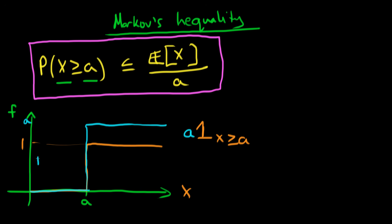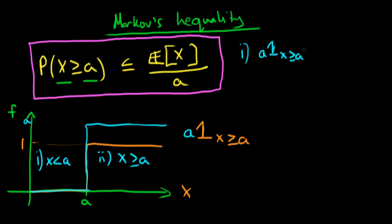We can think about this function as having two distinct regions. In the first region, x is less than a, and in the second region, x is greater than or equal to a. In region 1, our function a times 1{x ≥ a} takes on a value of 0. Since we know x is greater than 0 in this region, this is in fact less than x. For example, x could equal 1 while the indicator function equals 0.